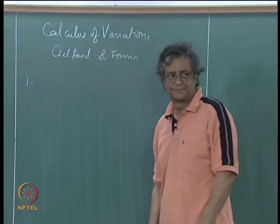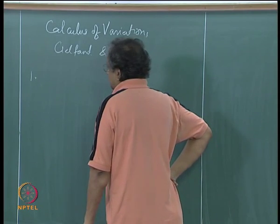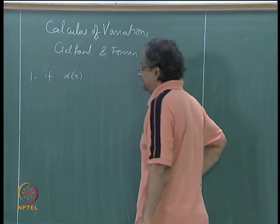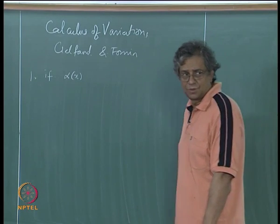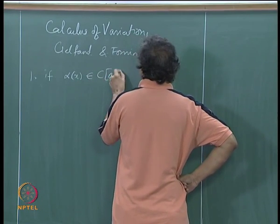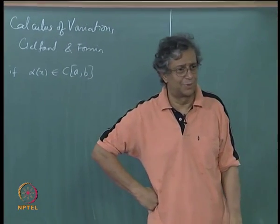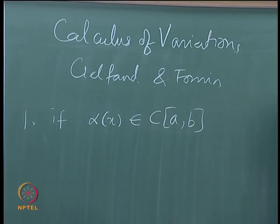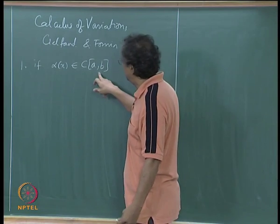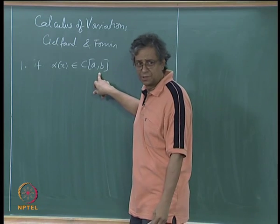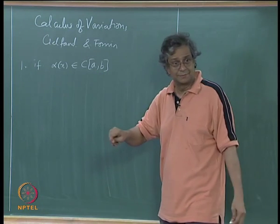The first lemma basically says: if alpha of x is a continuous function on an interval [A,B] — I write that as alpha of x belongs to C(A,B). This is shorthand notation; C(A,B) is like a bowl containing continuous functions defined on the domain [A,B]. You can stick your hand in and take out a function from that bowl.